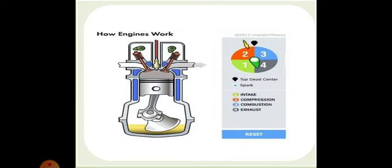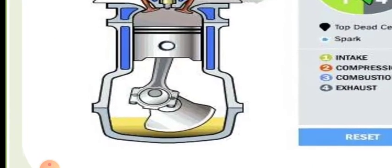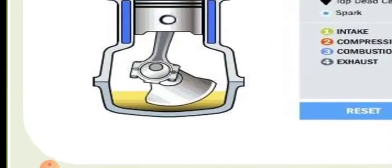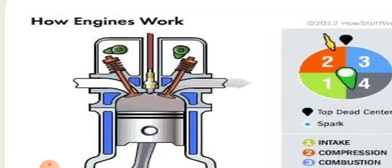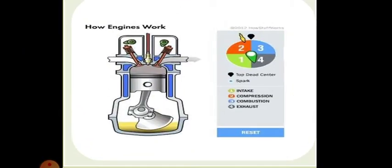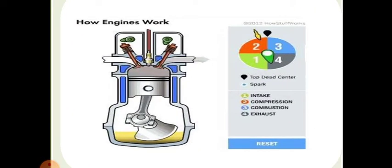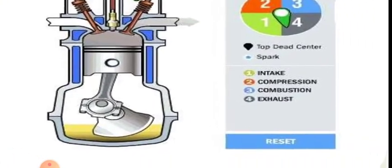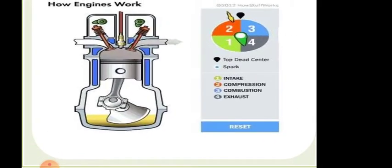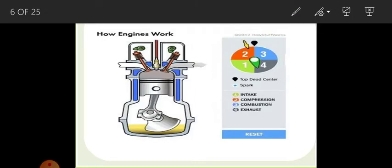The crankshaft movement moves the piston in a reciprocating manner, helping the valves to use this energy. During this reciprocation, there are four events taking place: the first is intake, involving taking the fuel to the combustion chamber; then compression; then combustion, also termed the power stroke; and finally exhaust. Basically, these four strokes take place in two revolutions in the case of a four-stroke engine, and in one revolution in the case of a two-stroke engine.